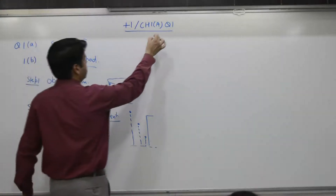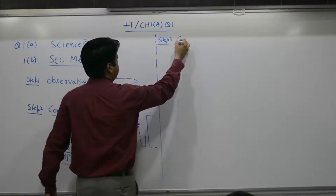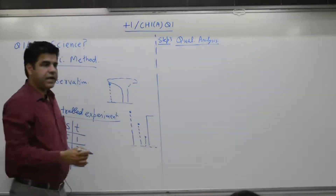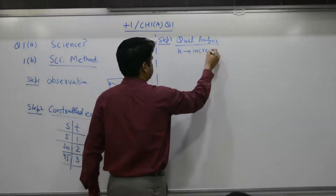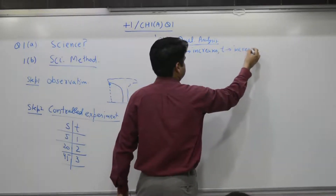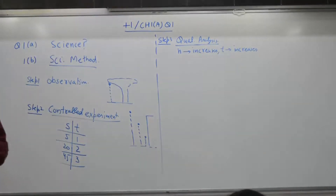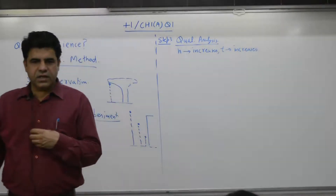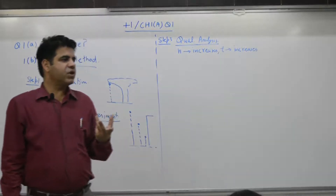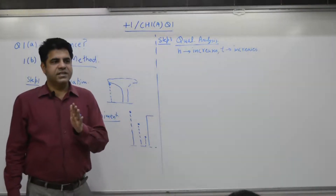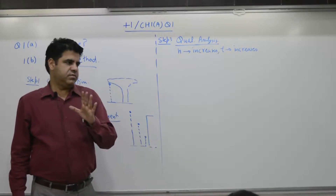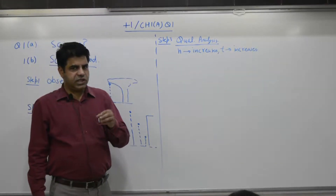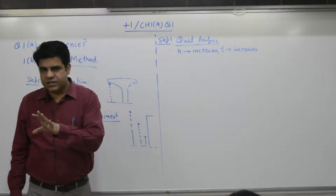Step three: qualitative analysis. The observation is that if height increases, time also increases. For example, if you go to a pizza shop and buy one pizza there is some bill; buy two pizzas and the bill is two times; buy three pizzas and the bill is three times. The only thing you know so far is: if you buy more pizza, the bill will be more — but how much exactly is the bill? This is known as qualitative analysis.